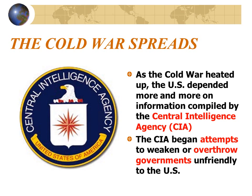The Cold War spread as the U.S. began to depend upon information compiled by the Central Intelligence Agency, developed by Truman and expanded by Eisenhower. The CIA began attempting to weaken or overthrow governments unfriendly to the United States — not necessarily undemocratic ones. The United States began to overthrow any government, democratic or not, if it didn't do what the U.S. wanted. This is ultimately an undemocratic, illegal policy carried out by an organization — the Central Intelligence Agency — operating outside ethical and legal norms.